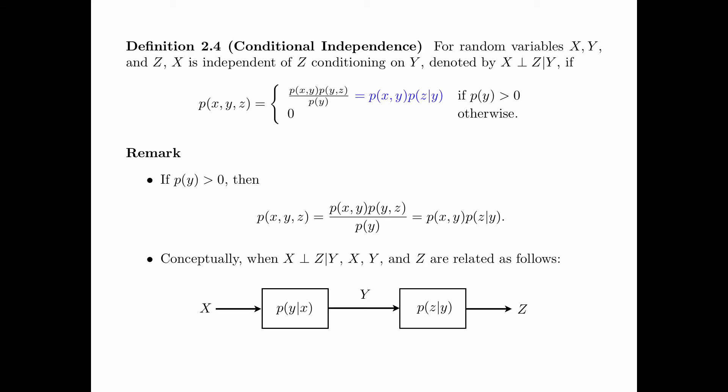Conceptually, when X is independent of Z given Y, the variables X, Y, Z are related as shown in the following diagram. We start with a random variable X, pass it through a channel P(Y given X) to obtain Y, and then pass Y through another channel P(Z given Y) to obtain Z. So the joint distribution is P(X,Y,Z) equals P(X) times P(Y given X) times P(Z given Y), where P(X) times P(Y given X) equals P(X,Y), giving P(X,Y,Z) equals P(X,Y) times P(Z given Y), as seen before.